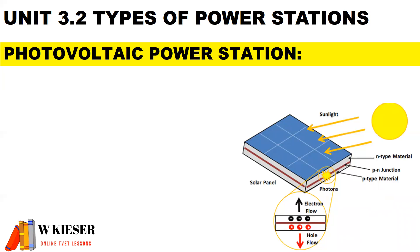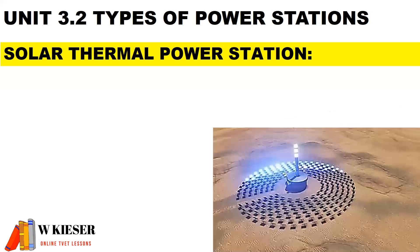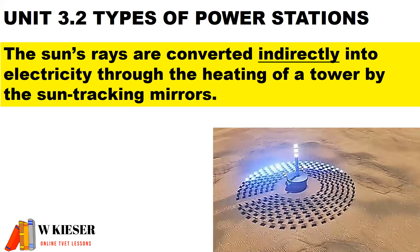A photovoltaic power station consists of solar cells where the sun's rays are converted directly into electricity by releasing electricity from the sun's photons. For a solar thermal power station, the sun's rays are converted indirectly into electricity through the heating of a tower by sun-tracking mirrors.